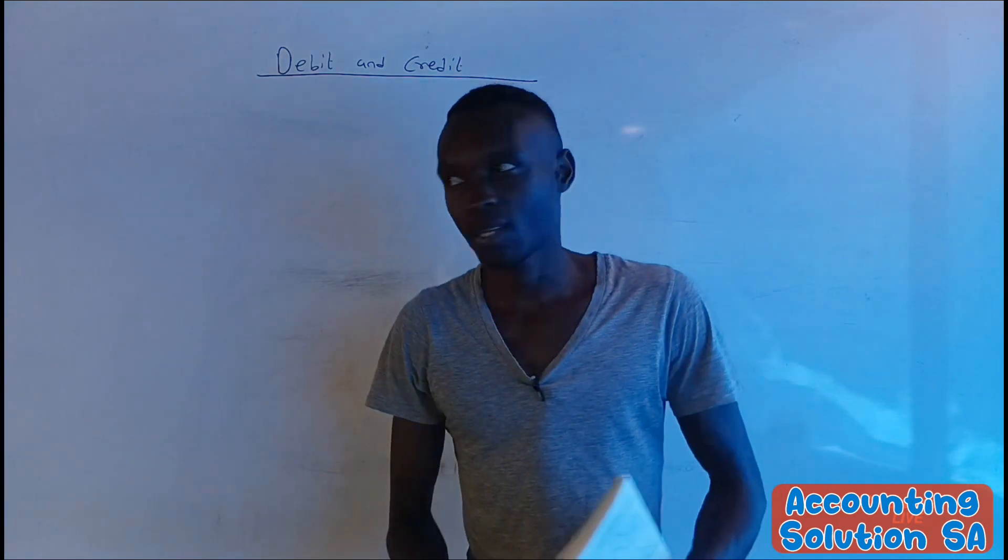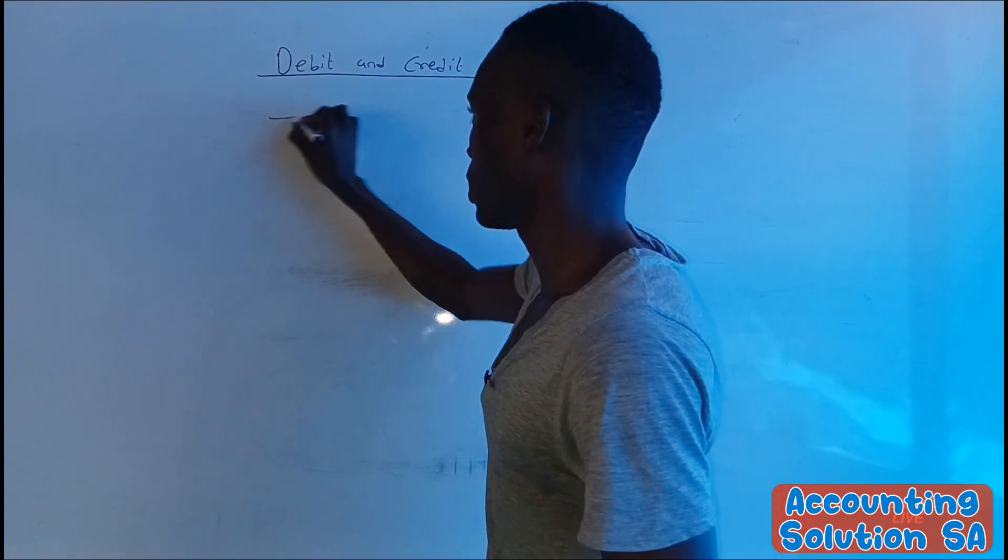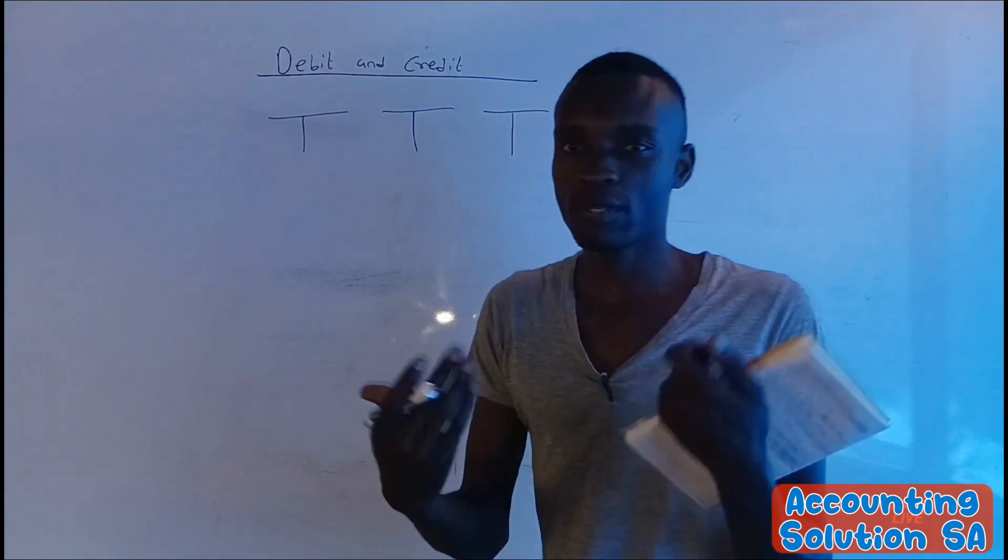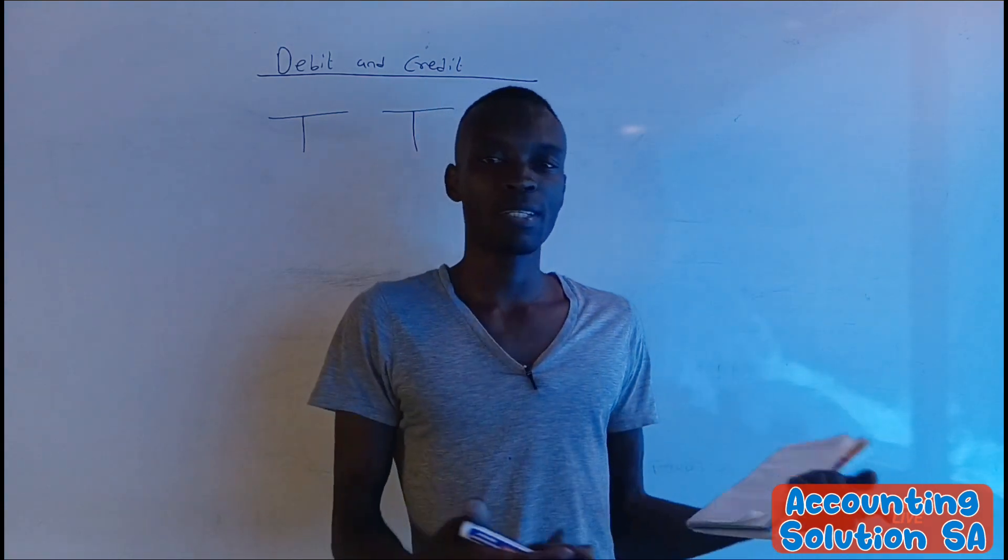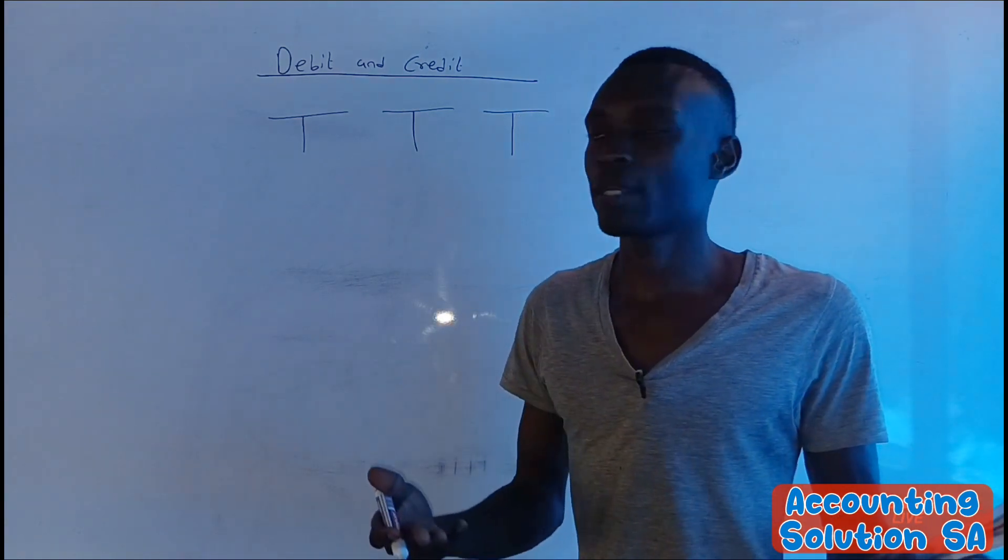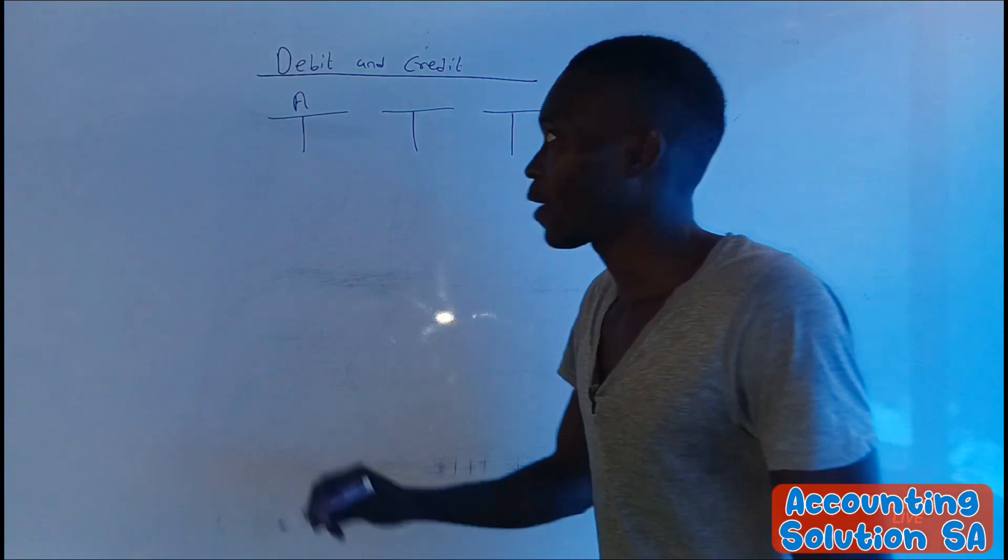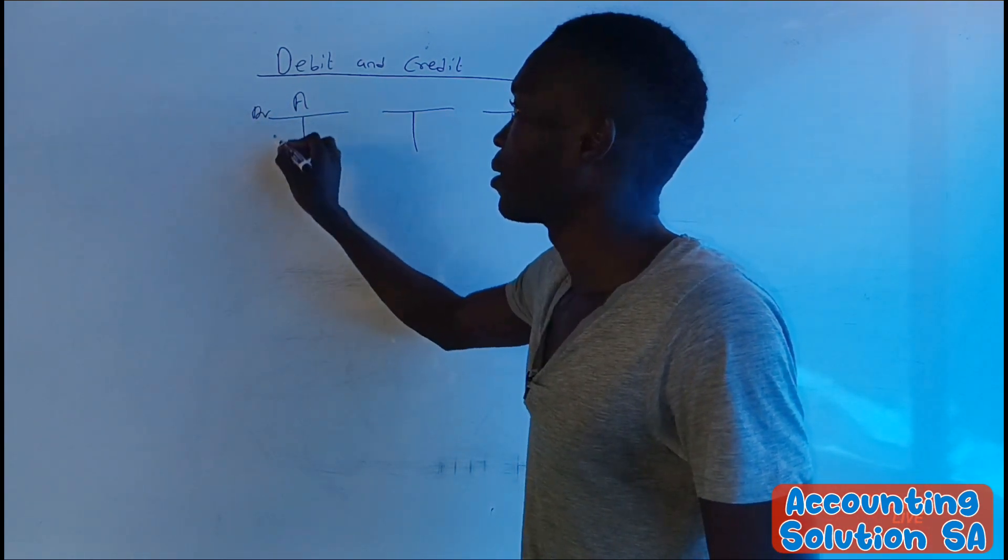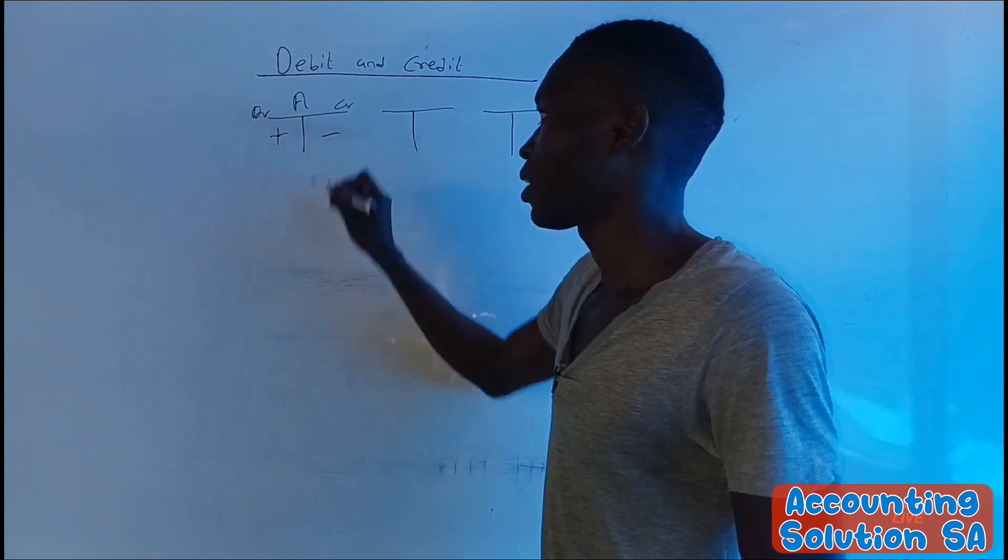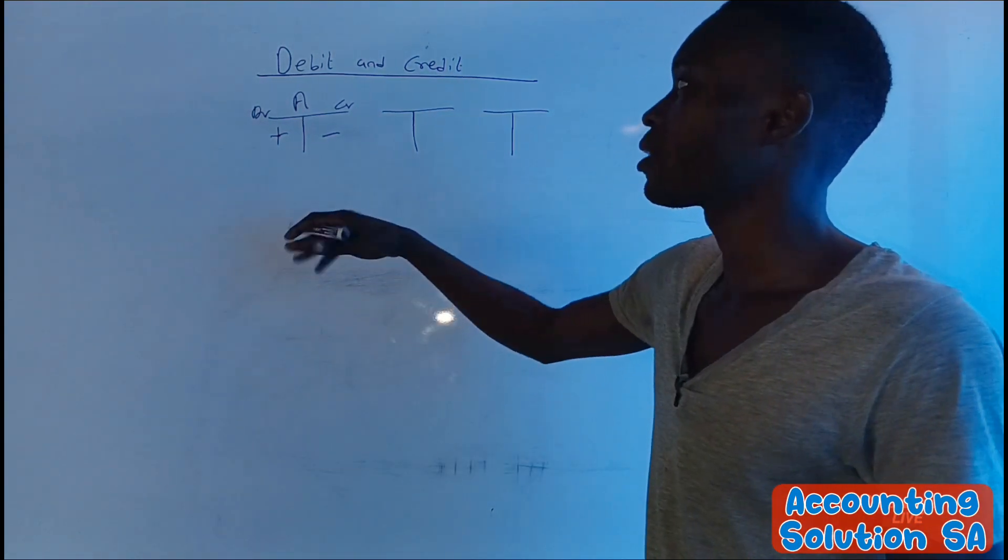Why? Because in accounting we have different accounts, so this is going to depend on which account you are referring to. If you just said what is debit, I'm going to say what do you mean? That will be my answer. Because when we talk about an asset, on the debit side we have an increment, on the credit side we have a decrease.